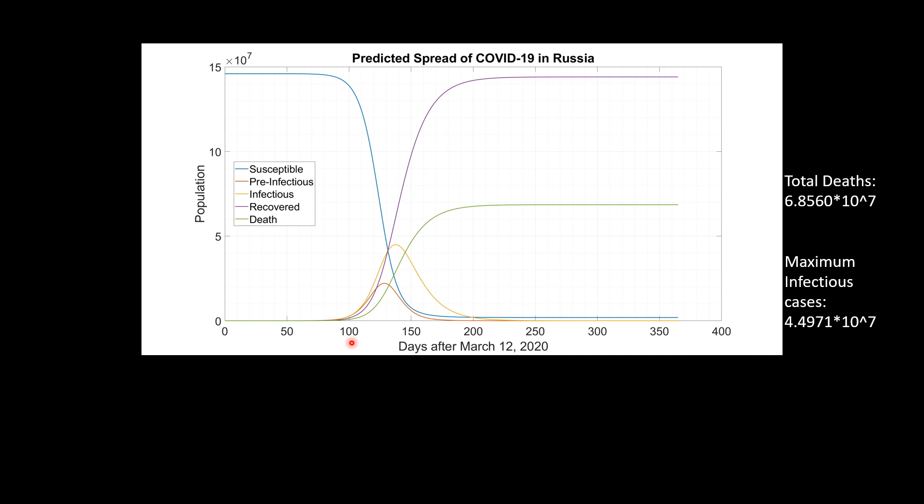Because this is a deterministic model, the number of infectious people will eventually be zero and the people will either have died or recovered or will have remained unaffected by the outbreak.